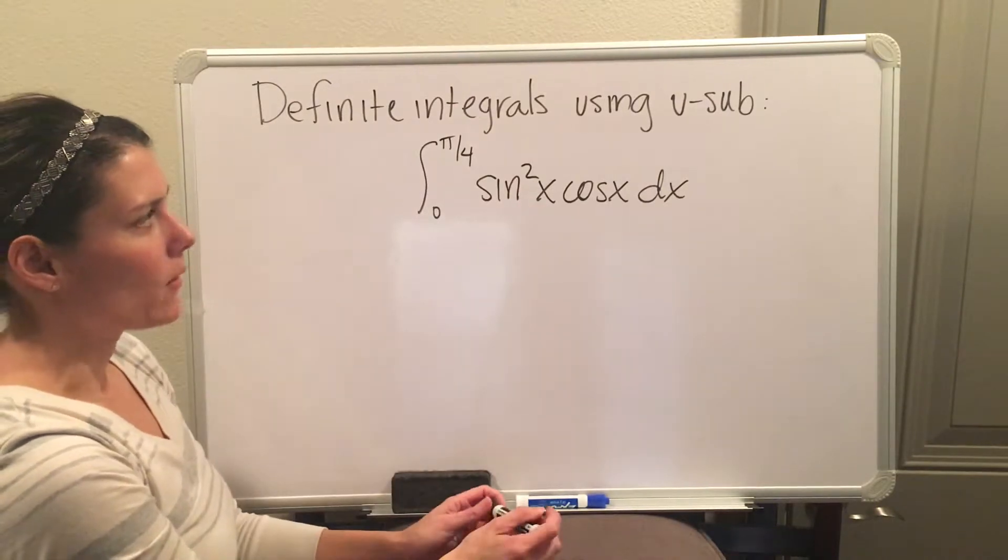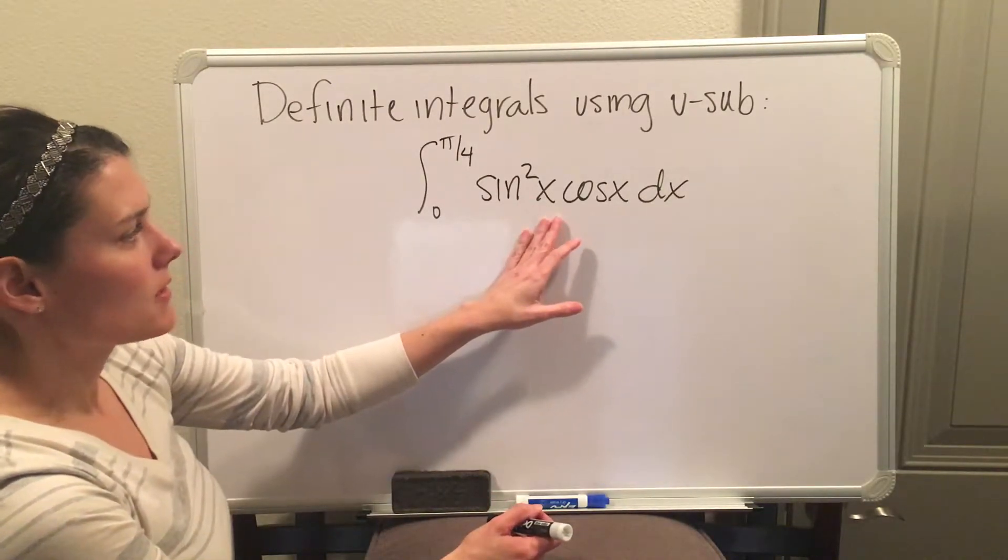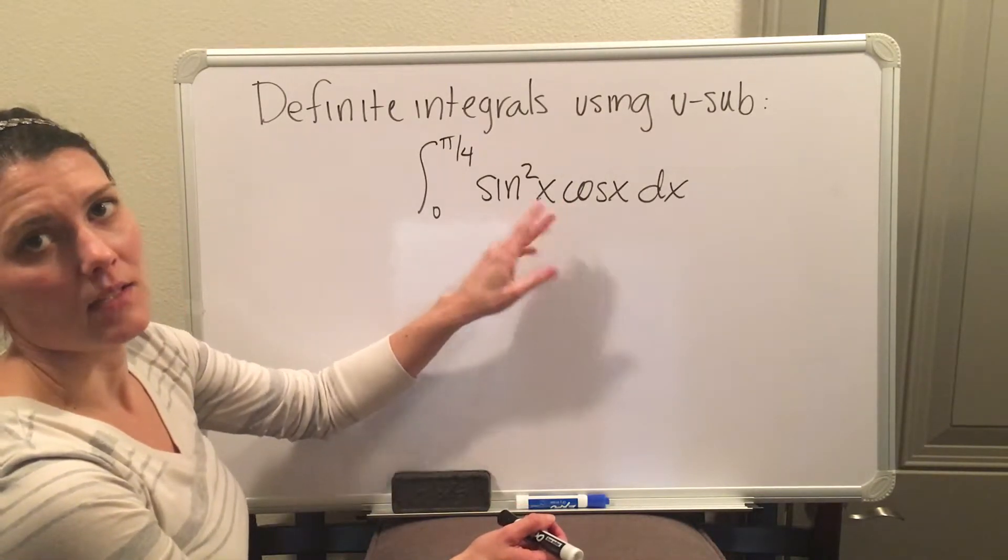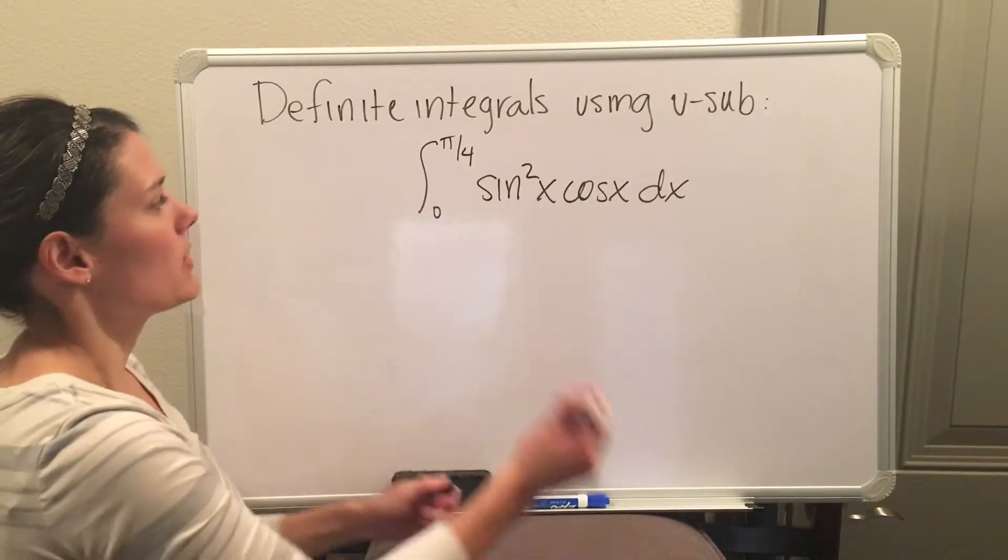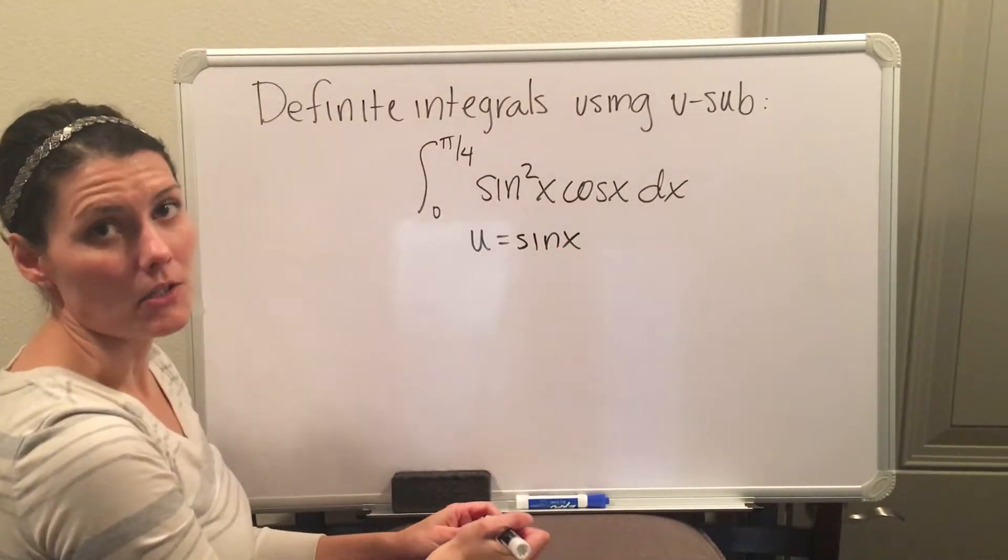Whenever you're doing an integral involving sine and cosine, you're going to pick your u to be the trig function that is raised to the power. So in this case, sine is the one raised to the power, so I'm going to pick sine to be the u.